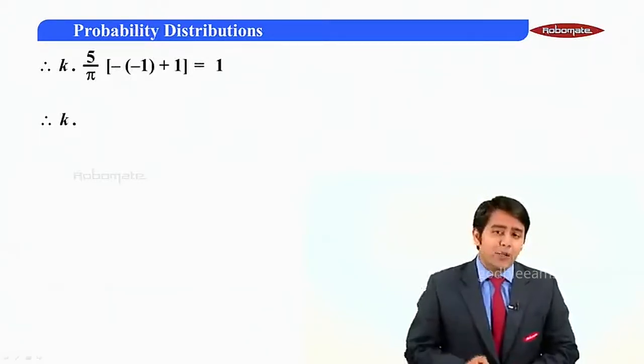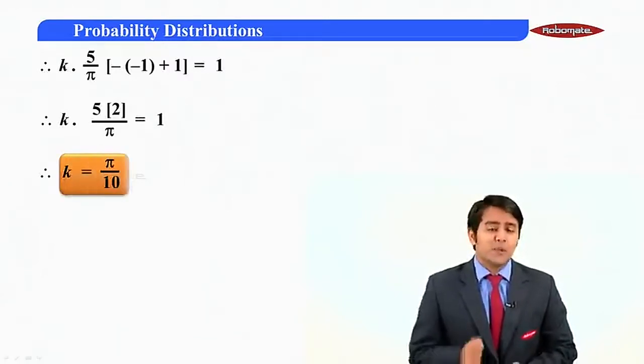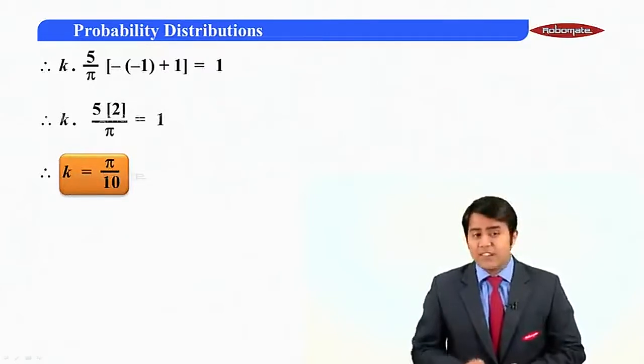Solving this further, k into phi into 2 by pi, this value is equal to 1. On further simplification, we get k is equal to pi by 10. So this is the value for k.